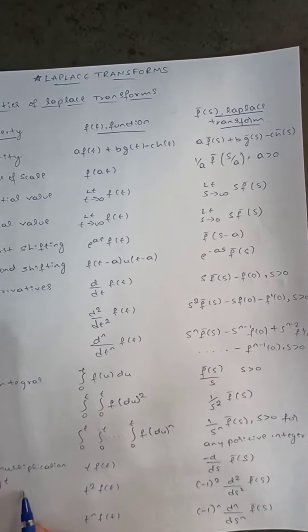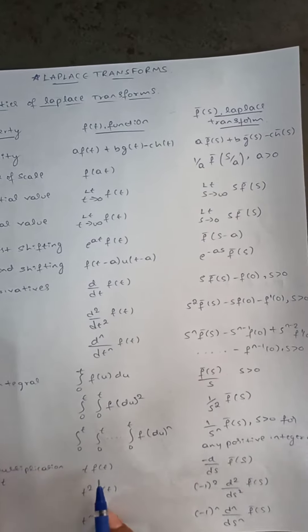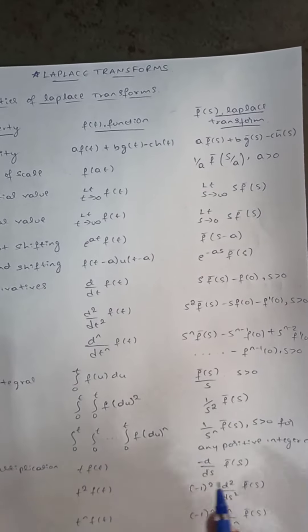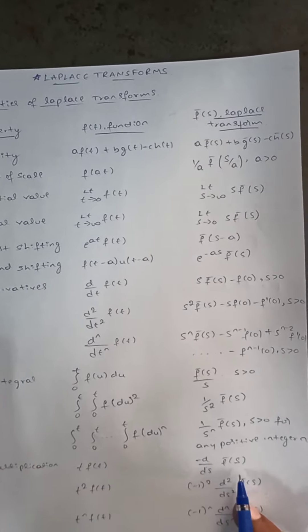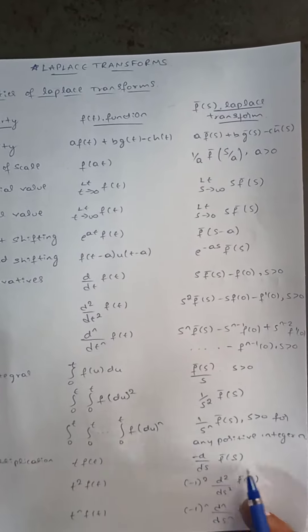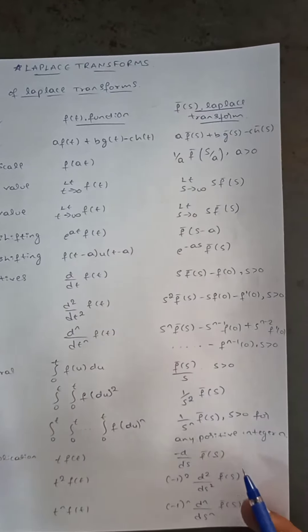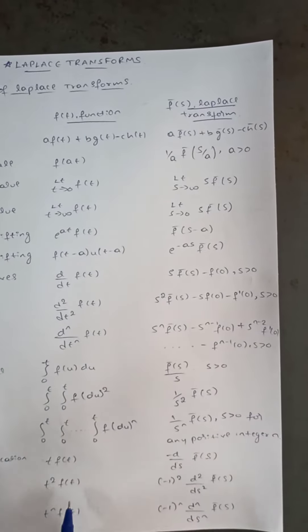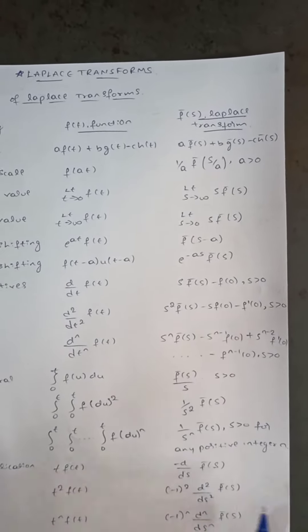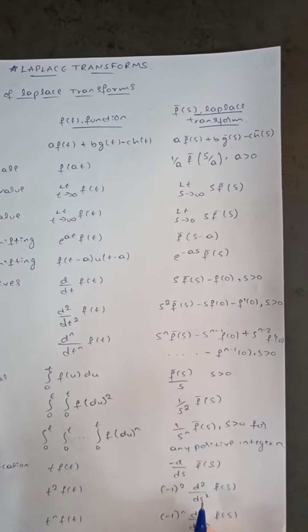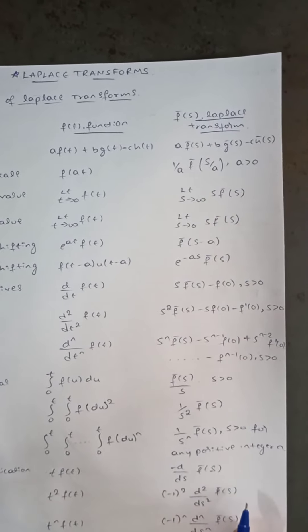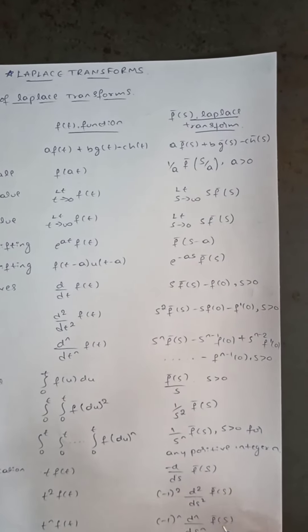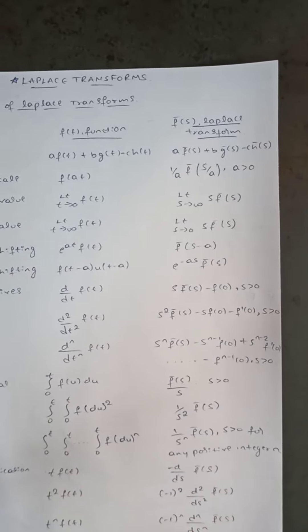The multiplication by t property states: the Laplace transform of t·f(t) equals −d/ds[f̄(s)], and t²·f(t) gives (−1)²·d²/ds²[f̄(s)].